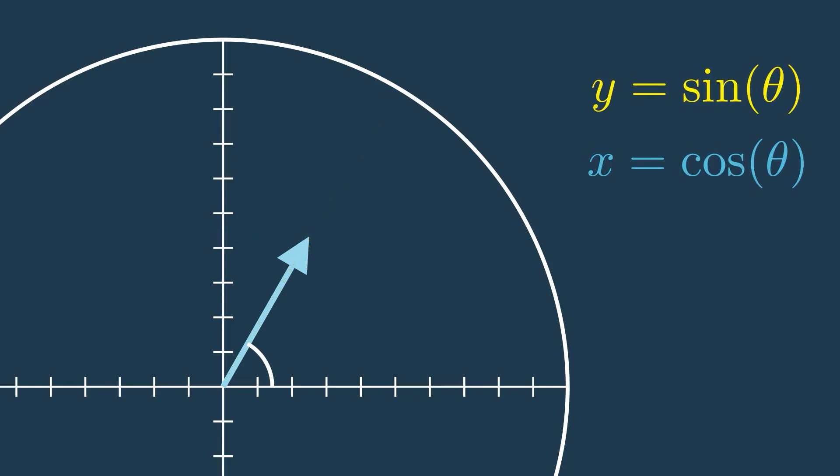We could also use this method going backwards. For example, inverse tangent of y over x is the angle that the vector makes. So if we rotate the vector back and forth until it's on the x axis, and keep track of the sum of the angles that we rotated it by, then we'll get the angle that the vector makes, or the inverse tangent of y over x.